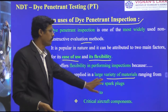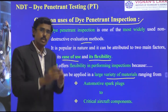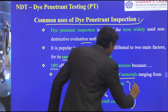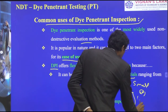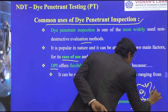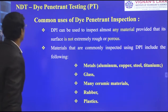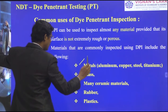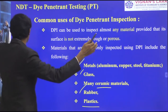DPI can inspect components from small automotive spark plugs to large critical aircraft components. Any size, small or large, any material — metal, glass, ceramics, rubber, plastic — any category can be inspected using this method.